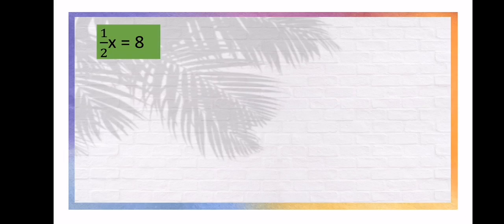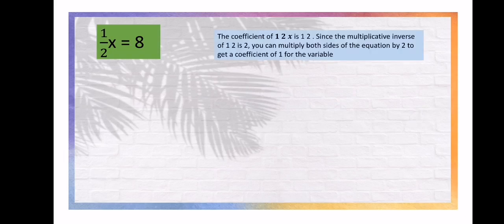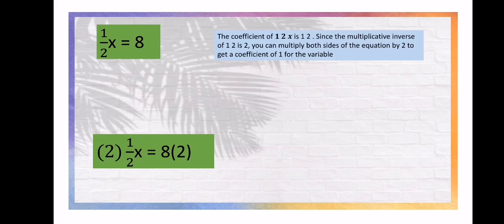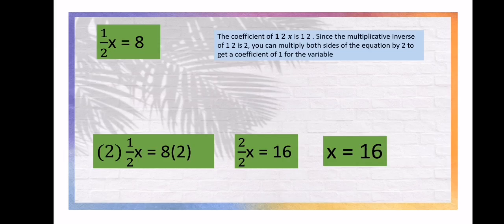For example, one-half X equals 8. The coefficient of X is one-half. Since the multiplicative inverse of one-half is 2, we multiply both sides of the equation by 2. On the left, one-half times 2 becomes 2 over 2, which equals 1, leaving just X. On the right, 8 times 2 equals 16. So, the answer is X equals 16.